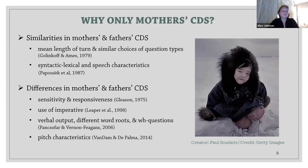In all our recordings, we could observe interaction between the target children and their family members, meaning that there were plenty of people besides mothers who can be considered their caregivers, including their much older siblings and grandparents who often live in the same household. Why didn't we consider their speech directed to the children? There have been debates on child-directed speech, whether it differs depending on the gender and age of the speaker, their relationship to the child, and their role in the child's life. If we take mothers' and fathers' child-directed speech as an example, we'll see that earlier studies seemed to lean toward the theory that their child-directed speech has similar characteristics.